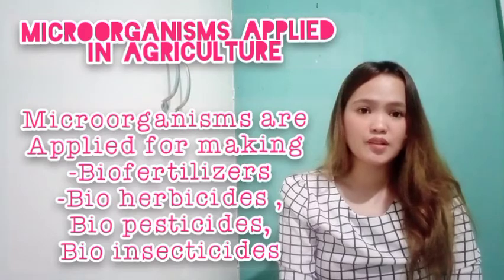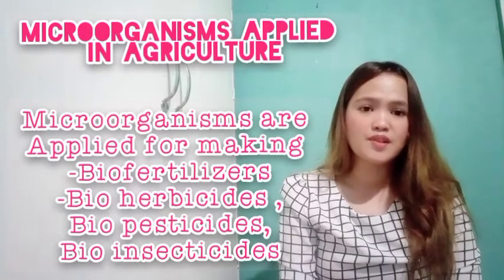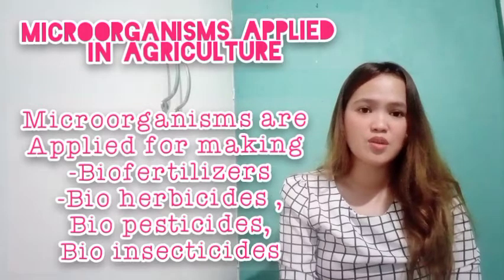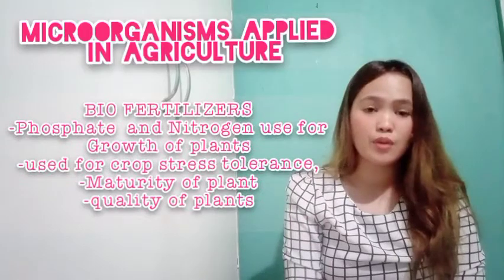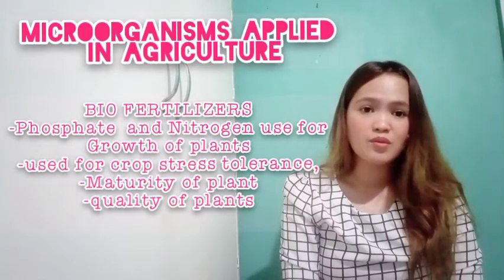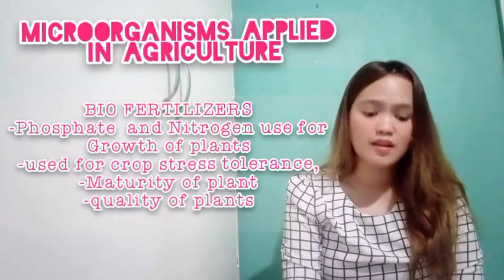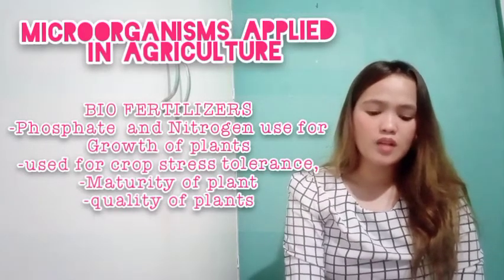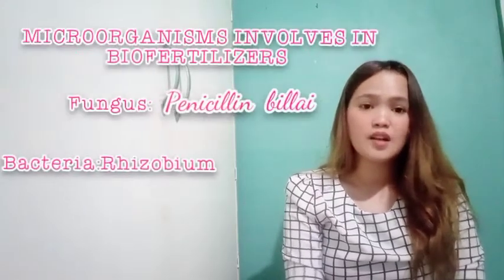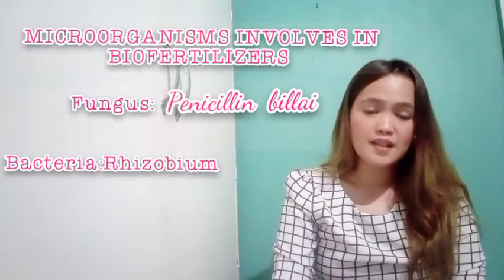Just imagine life without these microorganisms — life would be wretched on this planet for the survival of the human race. These indigenous microorganisms are used for safeguarding human survival. In agriculture, microorganisms are applied for making biofertilizers, bioinsecticides, bioherbicides, and biopesticides. For biofertilizers, they use phosphate and nitrogen, which are important for the growth of plants. These compounds exist naturally in the environment, but plants have limited access to extract them. Phosphate plays an important role in crop stress tolerance, maturity of plants, quality of plants, and nitrogen fixation.